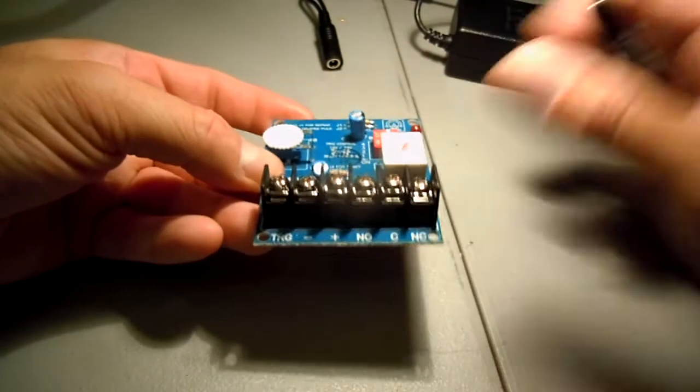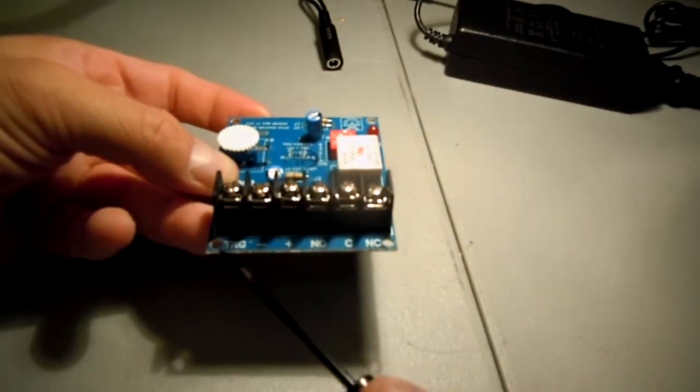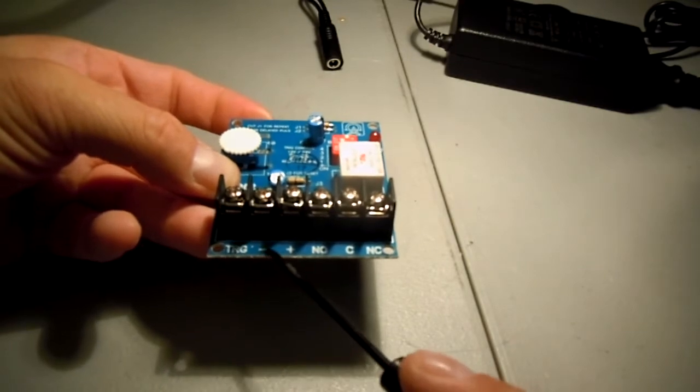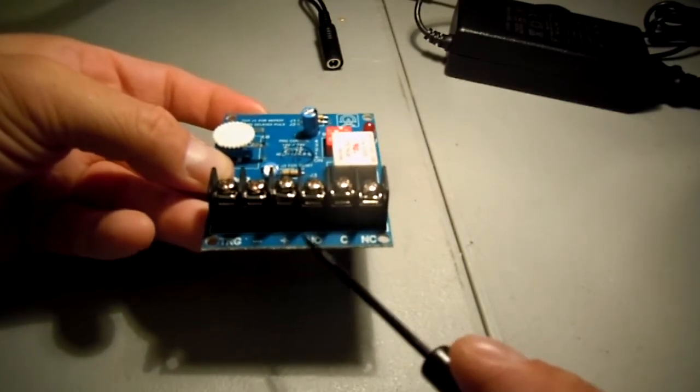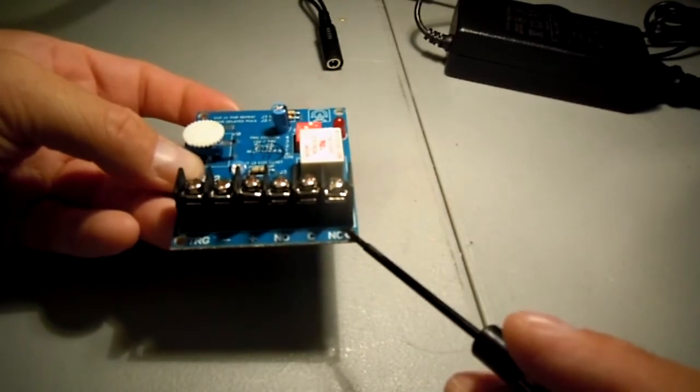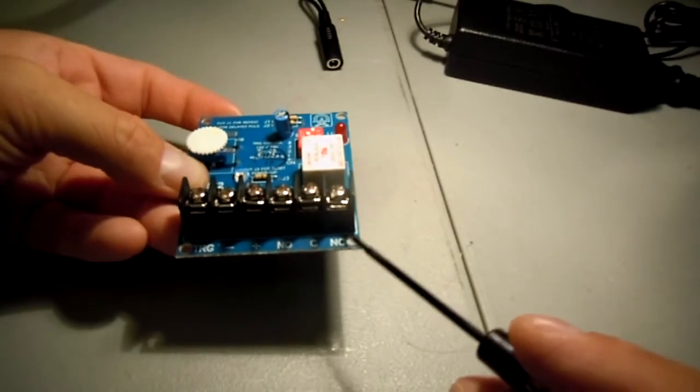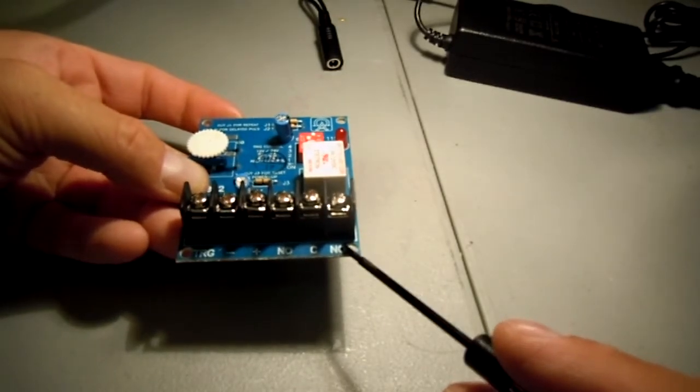Let me go over the bottom wiring slots. We have one for trigger, one for negative, one for positive, one for NO which is normally open, one for C which is your common, and one is NC for normally closed.